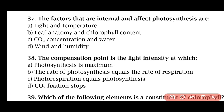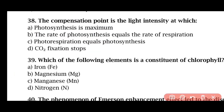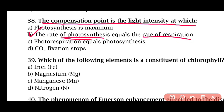Question 37: The factors that are internal and affect photosynthesis are — light and temperature, leaf anatomy and chlorophyll content, carbon dioxide concentration and water, or wind and humidity. The correct answer is option B. Leaf anatomy and chlorophyll content are internal factors affecting photosynthesis. Question 38: The compensation point is the light intensity at which — photosynthesis is at maximum, the rate of photosynthesis equals the rate of respiration, photorespiration equals photosynthesis, or carbon dioxide fixation stops. The correct answer is option B. At the compensation point, the rate of photosynthesis equals the rate of respiration.